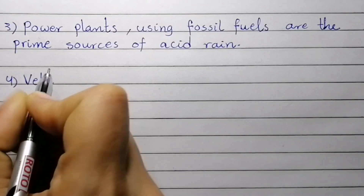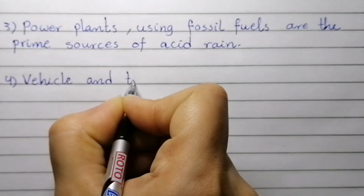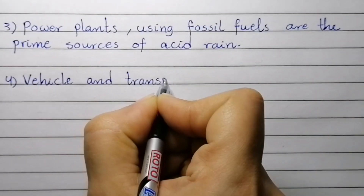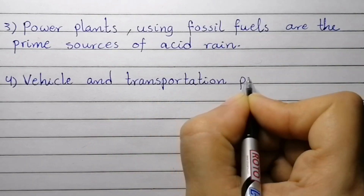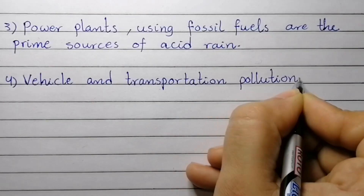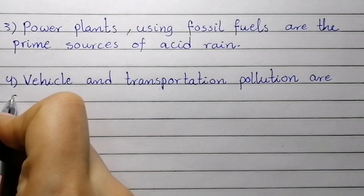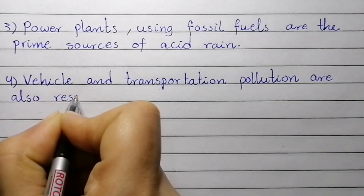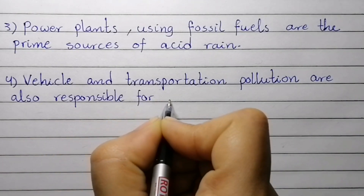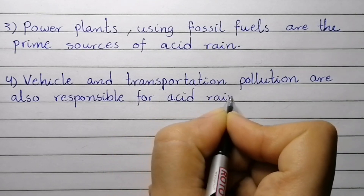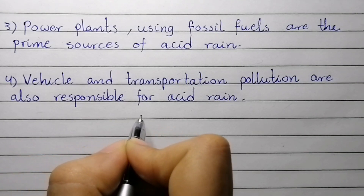Point number four: vehicle and transportation pollution are also responsible for acid rain.